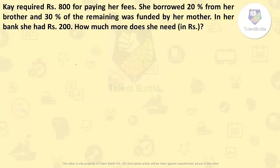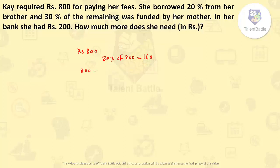Check this question. K required Rs.800 for paying her fees. She borrowed 20% from her brother, so 20% of 800 is 160. And 30% of the remaining was funded by her mother. She needed 800; after borrowing 160 from her brother, the remaining amount is 640. So 30% of 640 — which is 192 — was funded by her mother.